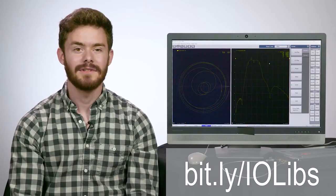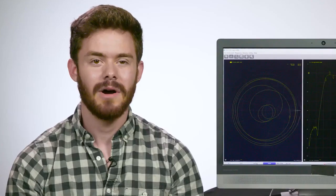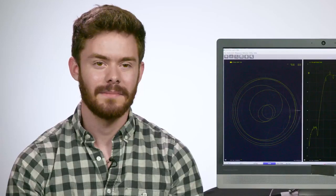First things first, before we actually dive into how to use this new type of instrument, we have to get the software downloaded and ready to use on our PC so that we can actually control this box. The first thing you have to do is download the Keysight IO Libraries at the link on the screen. This is what will allow you to connect instruments to your PC and manage those connections.